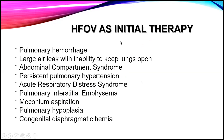HFOV can also be used as initial therapy — from the start, bypassing conventional ventilation — in certain diseases. Severe pulmonary hemorrhage is an indication to start directly on HFOV. Large air leak syndrome with inability to inflate the lung is another indication. Persistent pulmonary hypertension, especially with pulmonary hypoplasia or congenital diaphragmatic hernia, is better started on HFOV. Bilateral pulmonary interstitial emphysema and, in some experts' preference, meconium aspiration syndrome are also indications for early HFOV.